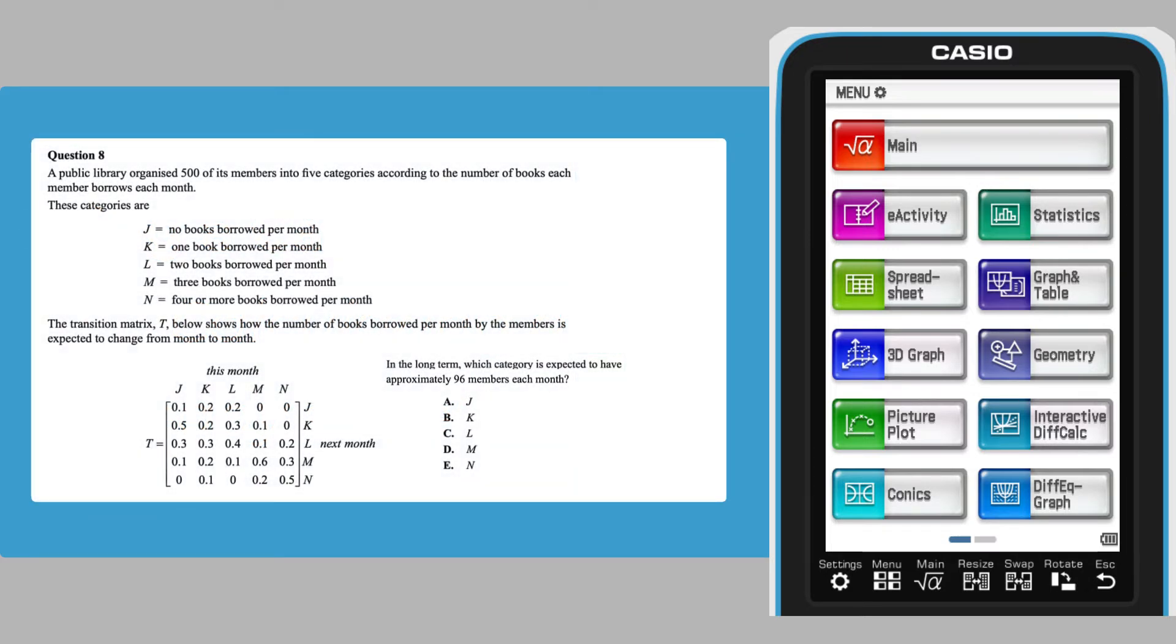One way to calculate the steady state for this problem is to raise the transition matrix to a large power, i.e., the power of 50.